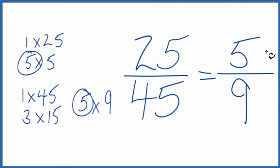We can't reduce this or simplify it any further, so we've simplified 25/45 down to 5/9. These are equivalent fractions. If you divide 5 by 9 or 25 by 45, you get the same number. It's just that we've reduced 25/45 down to 5/9.